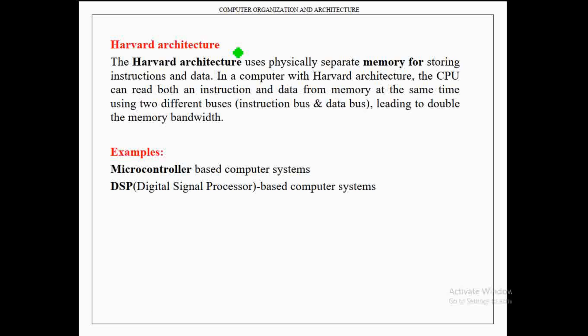The Harvard architecture uses two different memories: one memory is used for storing instructions and another memory is used for storing data. In a computer with Harvard architecture, the CPU can read both an instruction and data from memory at the same time using two different buses — the instruction bus and the data bus. Since it uses two different buses, it leads to double the memory bandwidth. Examples of Harvard architecture are microcontroller-based computer systems and DSP (digital signal processor) based computer systems.